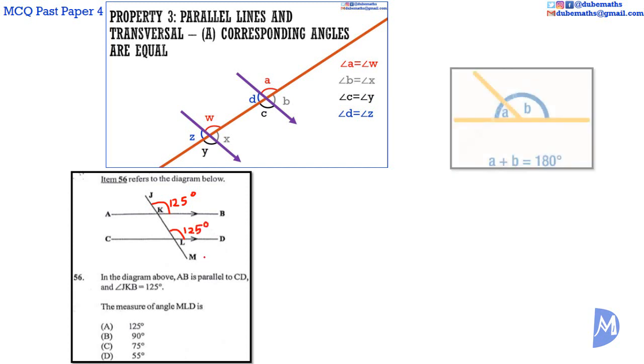Angles at a point on a straight line are supplementary, that is, equal to 180 degrees. Therefore, angle KLD added to angle MLD, the angle we're asked to find, is equal to 180 degrees.